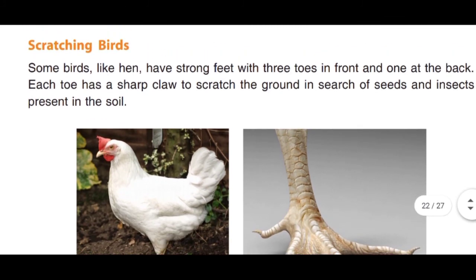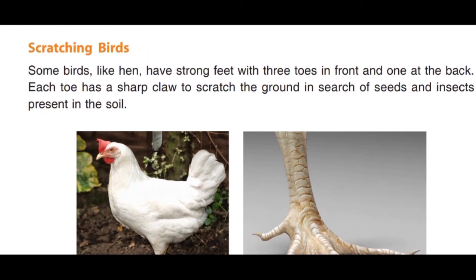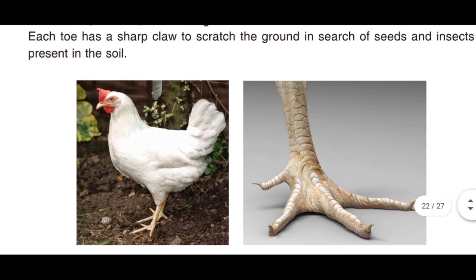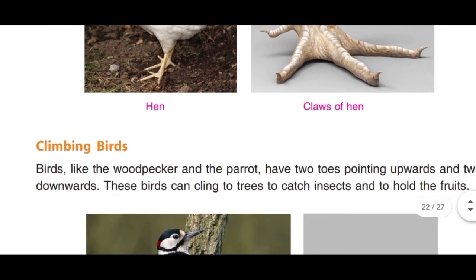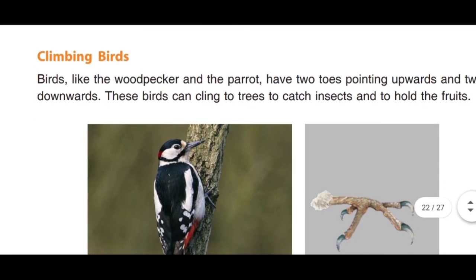Scratching birds: Some birds like hen have strong feet with three toes in front and one toe at the back. Each toe has a sharp claw to scratch the ground in search of seeds and insects present in the soil. Unka toe bahut hi strong hota hai jisse yeh mitti ko aasani se khurod sakte hain insects ya seeds dhundhne ke liye.